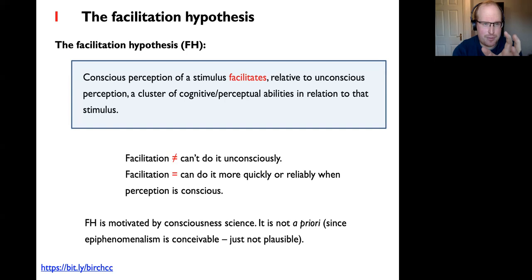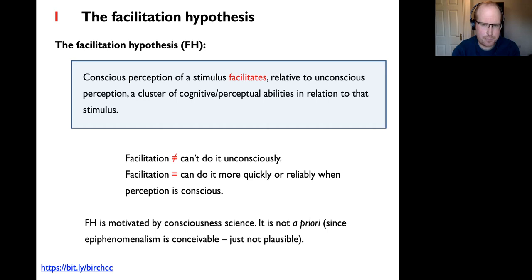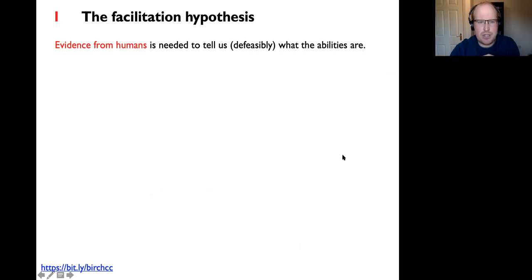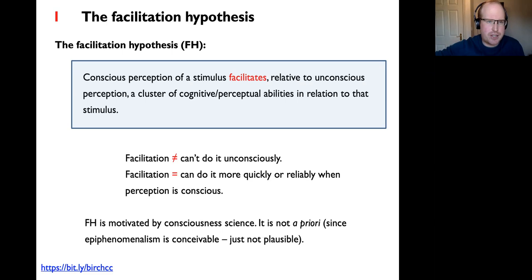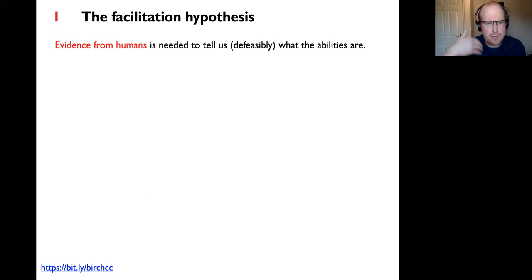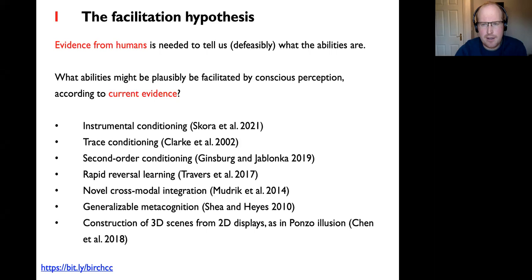It's very reasonable to think conscious perception is an evolved phenomenon that must serve some function shaped by natural selection to have the richly structured features it has. We turn to consciousness science for an empirically plausible hypothesis about what that function is—and that's what the facilitation hypothesis is supposed to capture. It's intended to be empirically motivated by the broad trajectory of consciousness science over the past 40 years. Despite all the disagreements between different theories, there's a strong trend toward this hypothesis being correct.